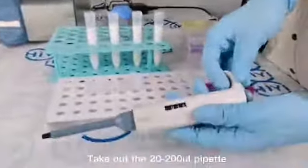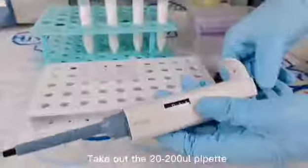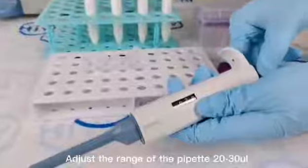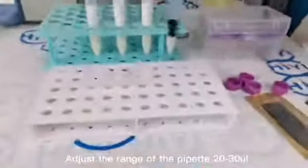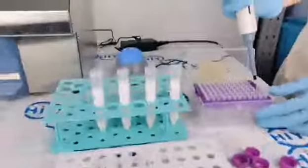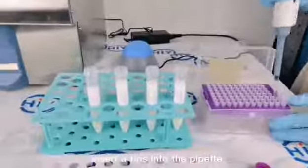Take out the 20 to 200 microliter pipette. Adjust the range of the pipette to 20 to 30 microliters. Insert a tip into the pipette.